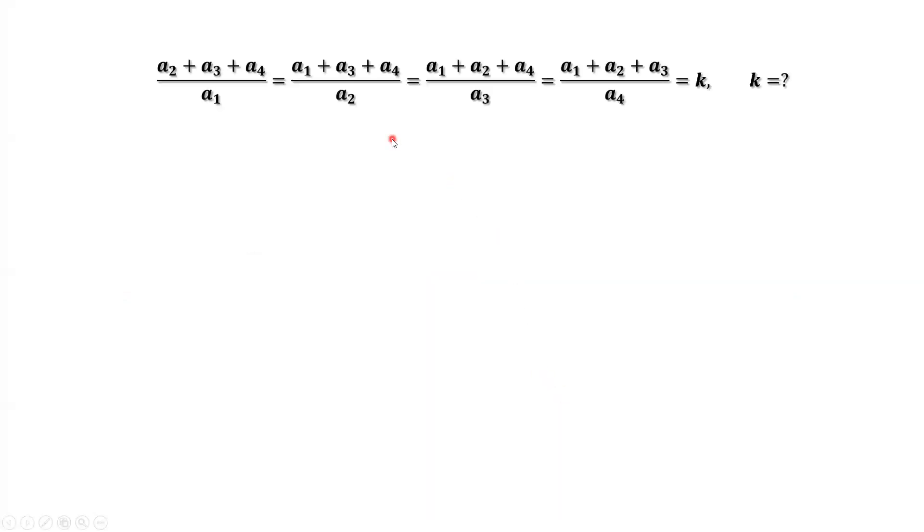From this given condition, we have A1 times K equals A2 plus A3 plus A4. This one, we use the first condition equals K.